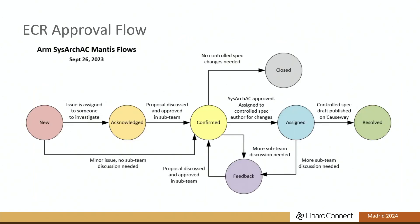We have an ECR approval process formed over the years. Basically, anyone can submit changes to our existing specs. The sub-teams review the changes, and when ready, they're submitted to the broader panel for a disposition. If approved, the content is integrated into the spec. For people who may not be initially comfortable submitting changes, they can work with ARM — we can be a proxy for partners to do that. This is well worked out over the last decade or so.